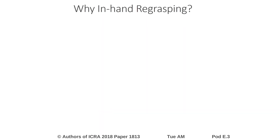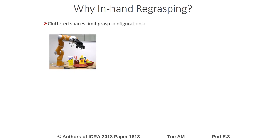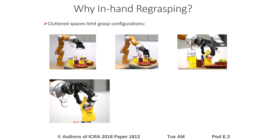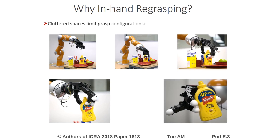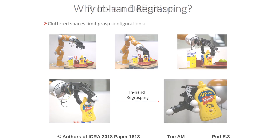Why do we need in-hand re-grasping? In cluttered spaces, objects can only be grasped in a limited number of configurations. Here, as an example, let's look at grasping the mustard bottle. In order to use it, the object needs to be in a side grasp, but due to clutter, it can only be grasped from the top. And once it's grasped from the top, it can be moved to free space, and then using in-hand re-grasping, it can be moved to a side grasp.